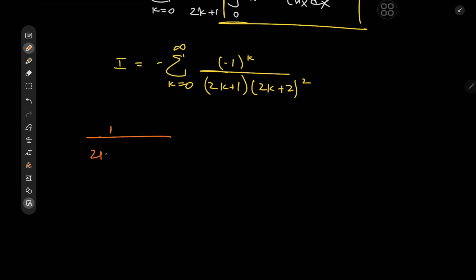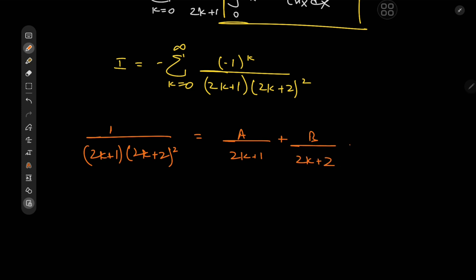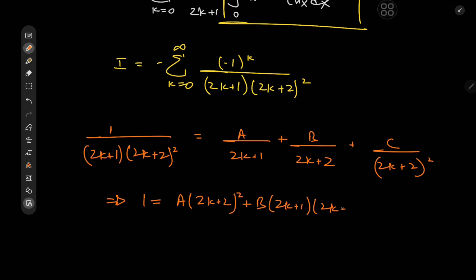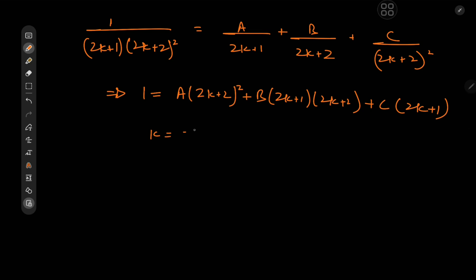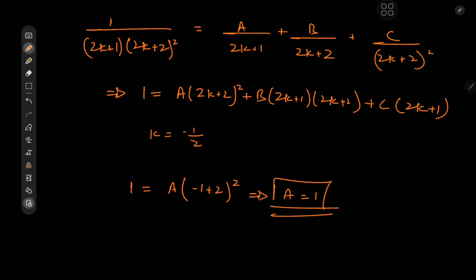We have 1 over (2k+1)(2k+2)², so we invoke a partial fraction decomposition: A over (2k+1) plus B over (2k+2) plus C over (2k+2)². This implies 1 equals A(2k+2)² + B(2k+1)(2k+2) + C(2k+1). Setting k = −1/2 so that the (2k+1) factors vanish gives 1 = A·(1)², so A = 1.